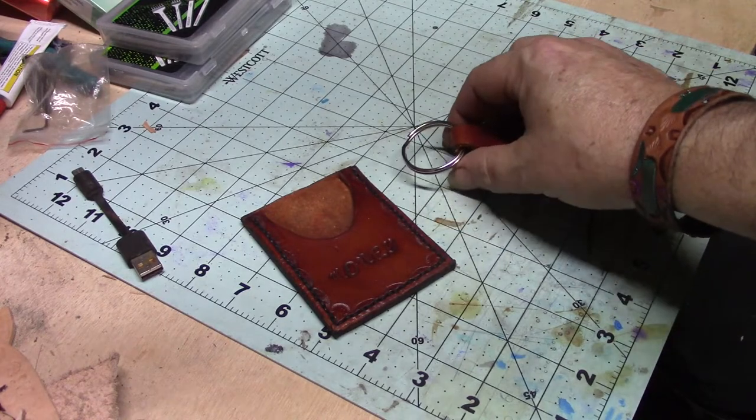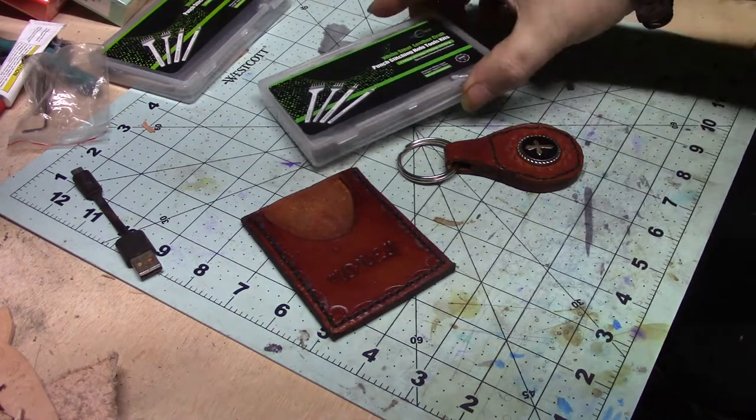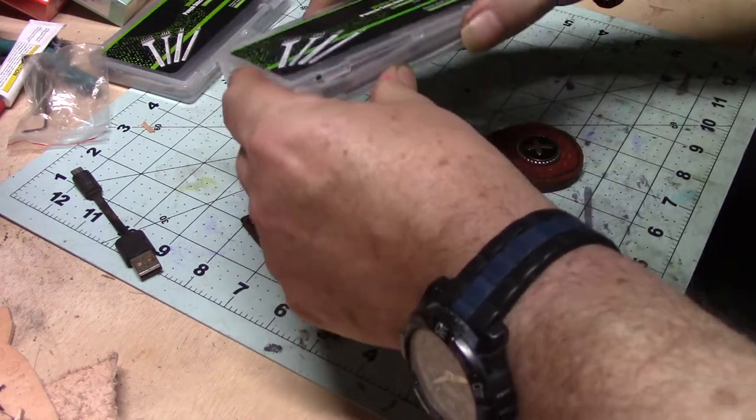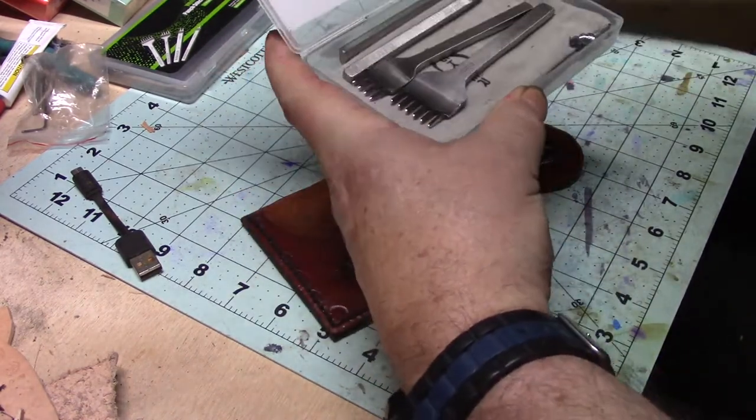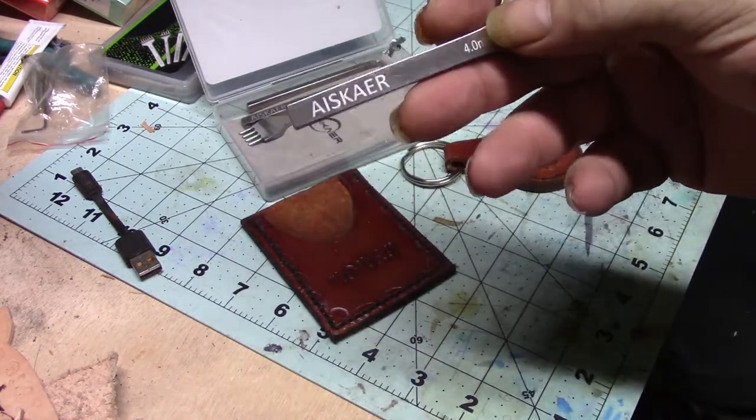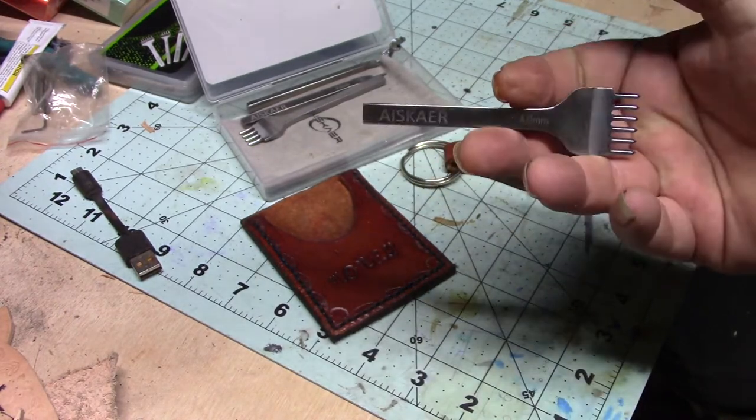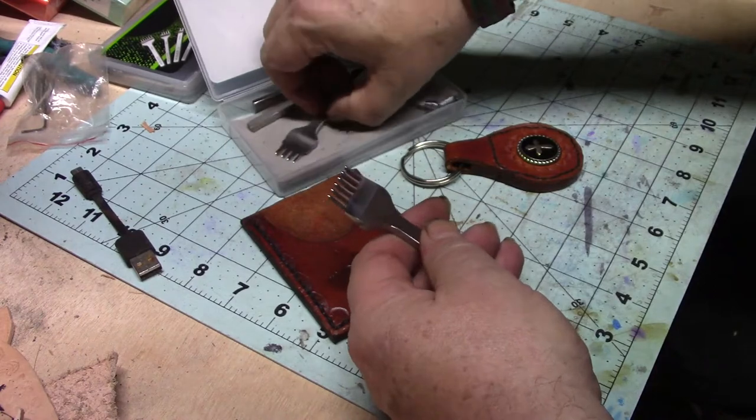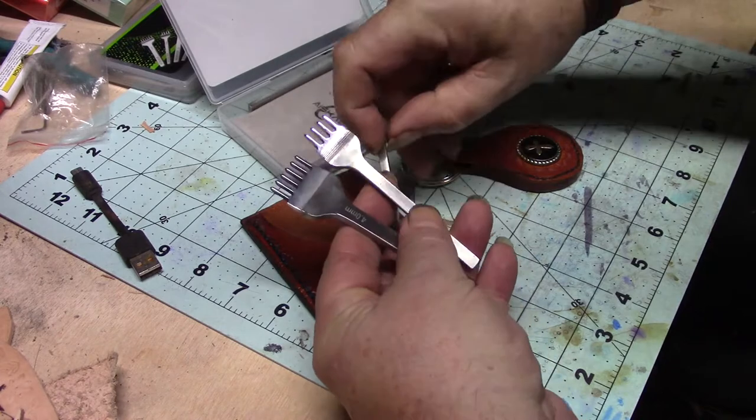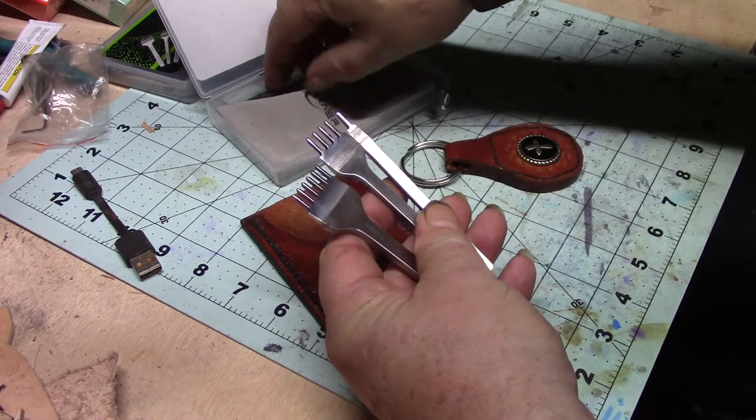So I bought a set of cheap punches off of Amazon. And they come in a set of six, four, a one and a two.